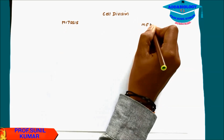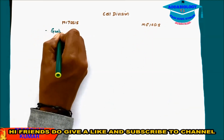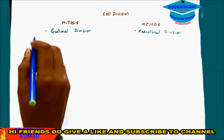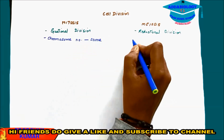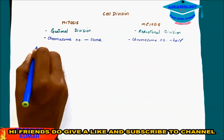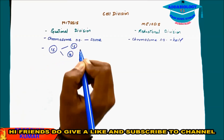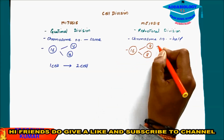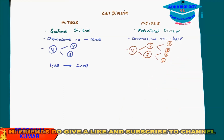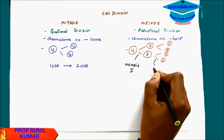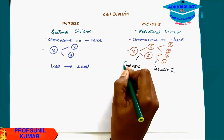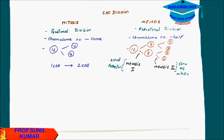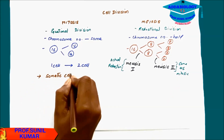There are two types of cell division: mitosis, which is equational division, and meiosis, which is reductional division. In mitosis, the chromosome number in daughter cells remains the same. In meiosis, the chromosome number becomes half. For example, if there are 16 chromosomes in a parent cell undergoing mitosis, the daughter cells also have 16. In meiosis, if the parent has 16, daughter cells have 8. From one cell you get two cells in mitosis.